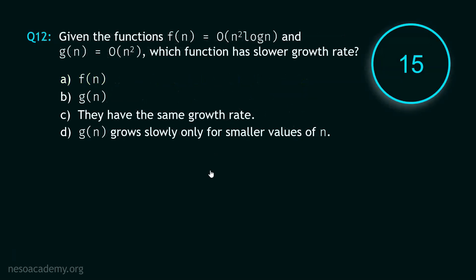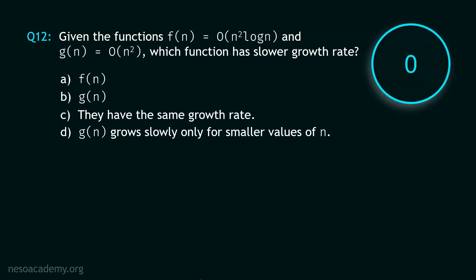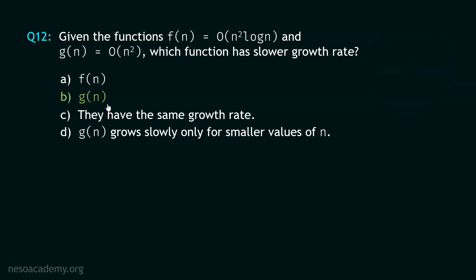Now let's move to question number 12. Your time starts now. Stop. Out of these two functions, which function has the slower growth rate? It is clearly g(n), so option B is the correct option. g(n) is O(n²) and f(n) is O(n² log n), so clearly g(n) has the slower growth rate.